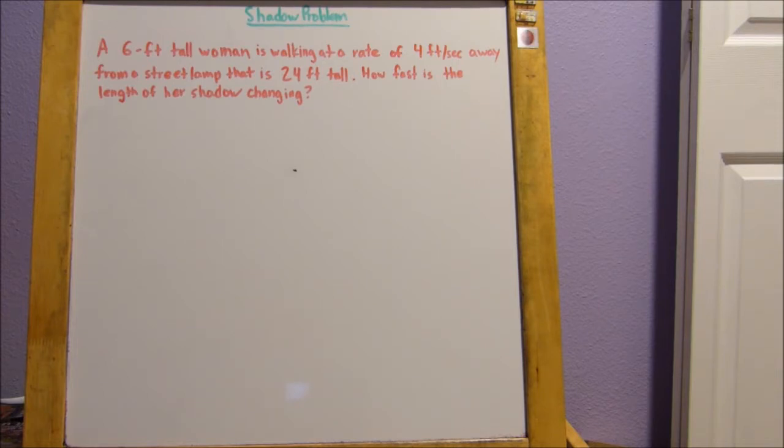So let me read the problem. A six-foot-tall woman is walking at a rate of four feet per second away from a street lamp that is 24 feet tall. How fast is the length of her shadow changing? So, like I said, this problem is going to have similar triangles. So let me just draw out a diagram.